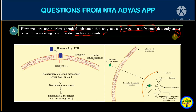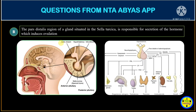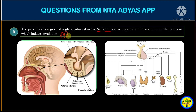Option B says that the pars distalis region of a gland situated in the sella turcica is responsible for secretion of the hormone which induces ovulation. First, the hormone that induces ovulation is LH (luteinizing hormone). LH is secreted by the pituitary gland, which is located in the sella turcica.